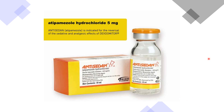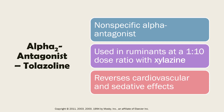Tolazoline is also an alpha antagonist, but it is considered a non-selective competitive alpha adrenergic receptor antagonist — it blocks both the alpha-1 and alpha-2 receptors. Because it blocks the alpha-1 receptor, it is also considered a direct peripheral vasodilator. In veterinary medicine, it is commonly used to reverse xylazine-induced sedation. It is used in ruminants at a dose ratio of 1:10 with xylazine, and it reverses the cardiovascular and sedative effects of xylazine.